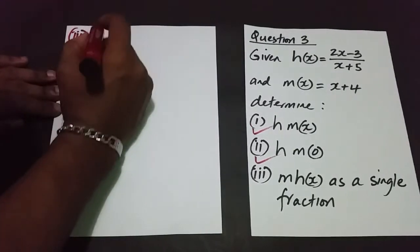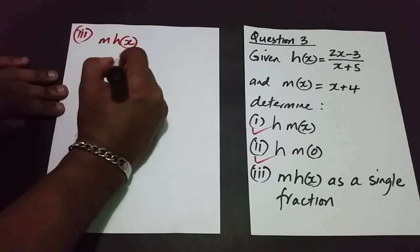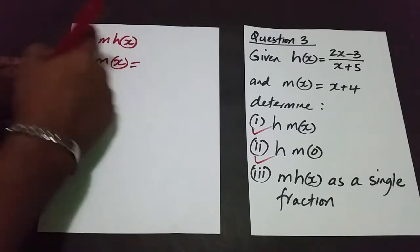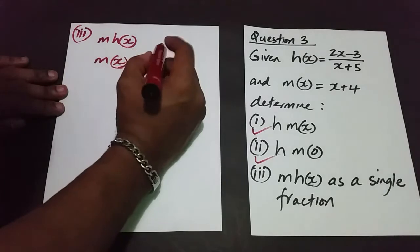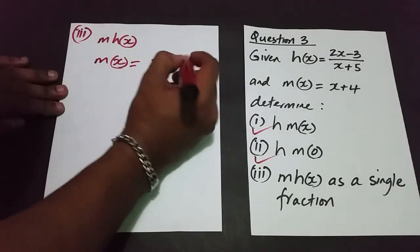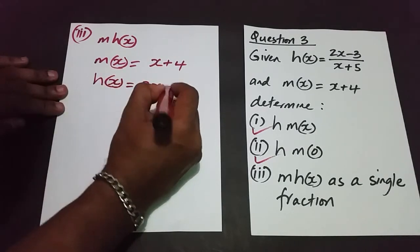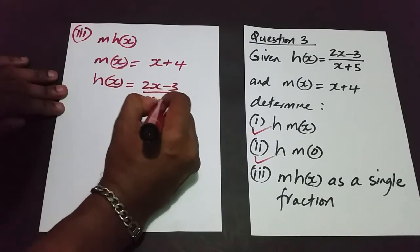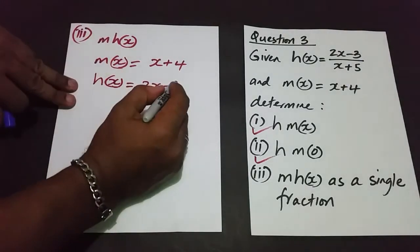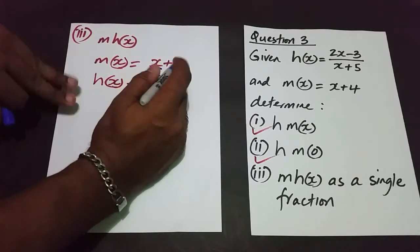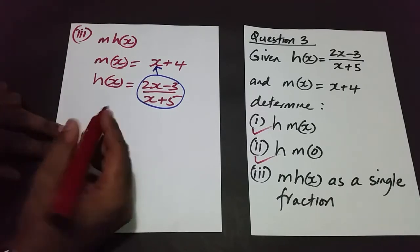So m of h of x is the composite function. The mother function is m(x) which is x plus 4, and the baby function is h(x) which is 2x minus 3 over x plus 5. And again, the massive baby is going to jump wherever x is, that's where the pouch is, so we're replacing x with 2x minus 3 all over x plus 5.